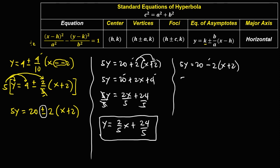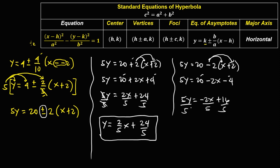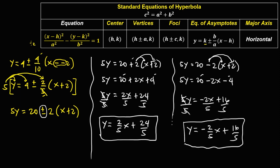For the second asymptote: 5y equals 20 minus 2(x plus 2), which gives 5y equals negative 2x plus 16, so y equals negative (2/5)x plus 16/5. This is the second equation of the asymptotes.